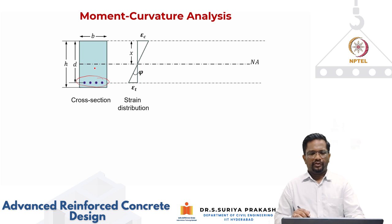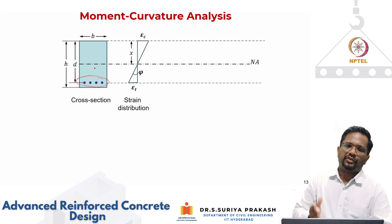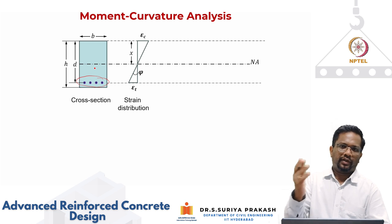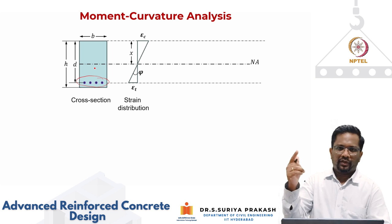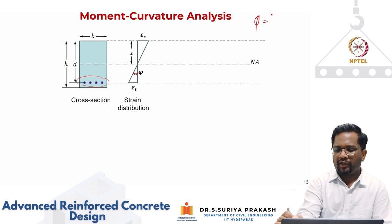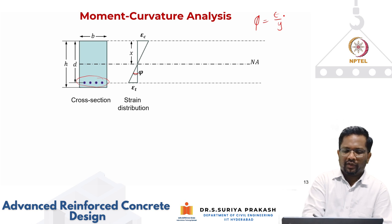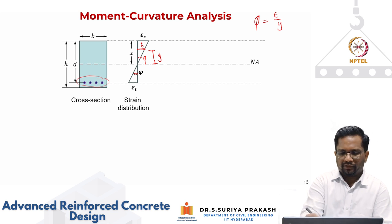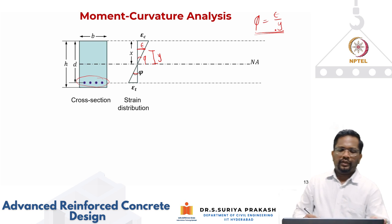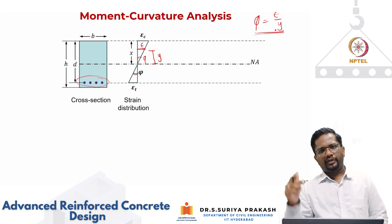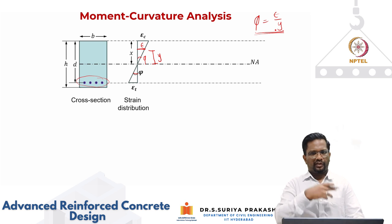The strain distribution is always going to be linear. The only thing is that for that particular strain distribution, materials can be either in the elastic state or in the inelastic, nonlinear region. So what we are saying is, if I assume a curvature — and what is curvature? It is nothing but epsilon divided by y, strain divided by y. If I know the strain at a location and the distance y from the neutral axis, the curvature is nothing but the slope of the strain distribution, P equals epsilon by y.